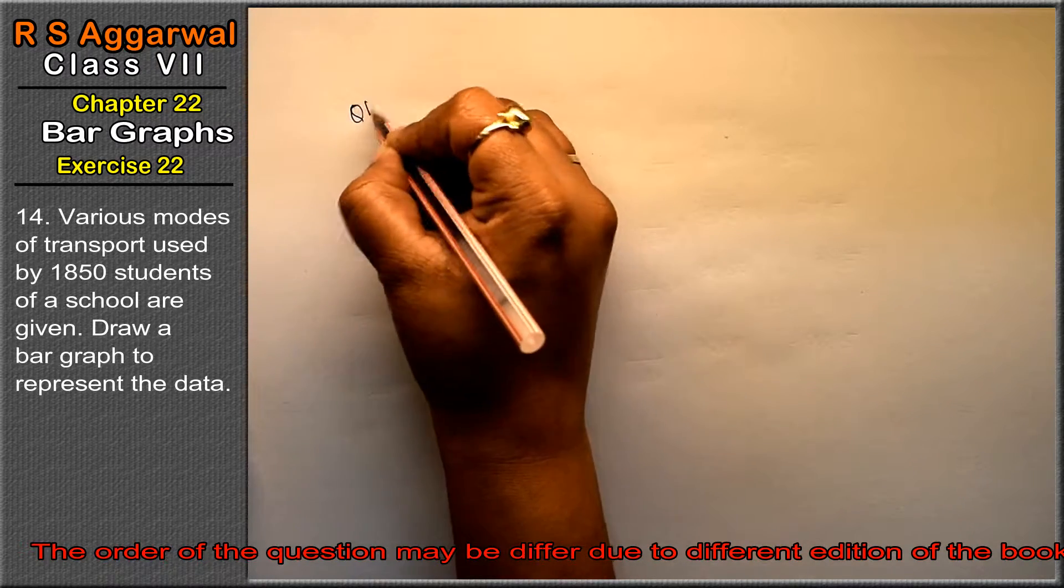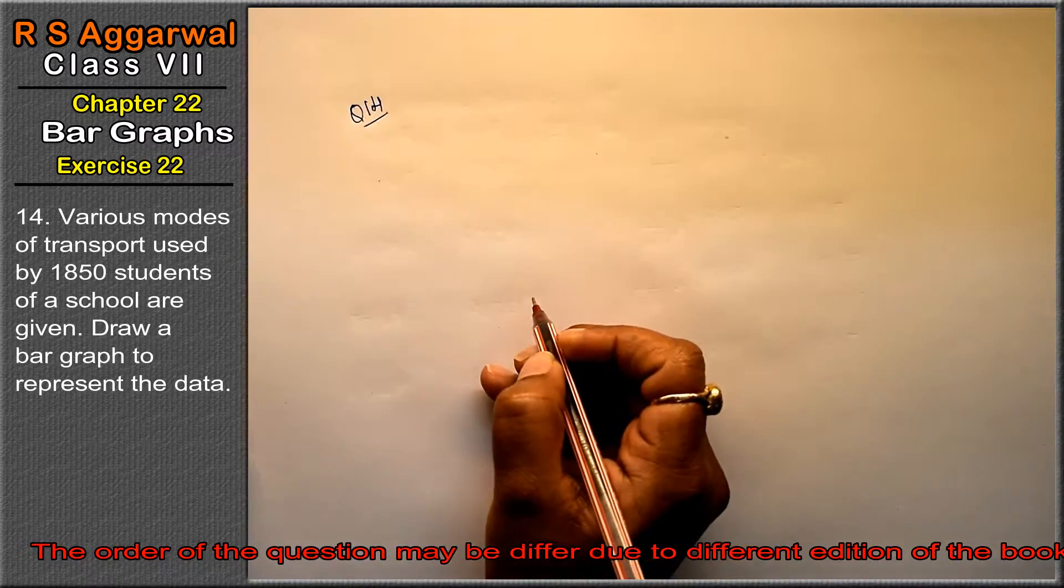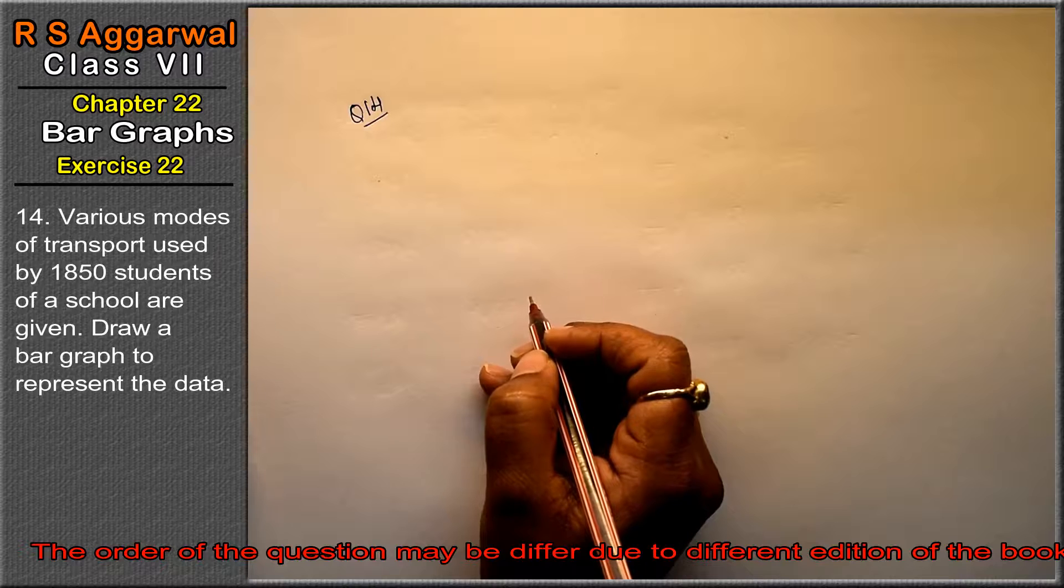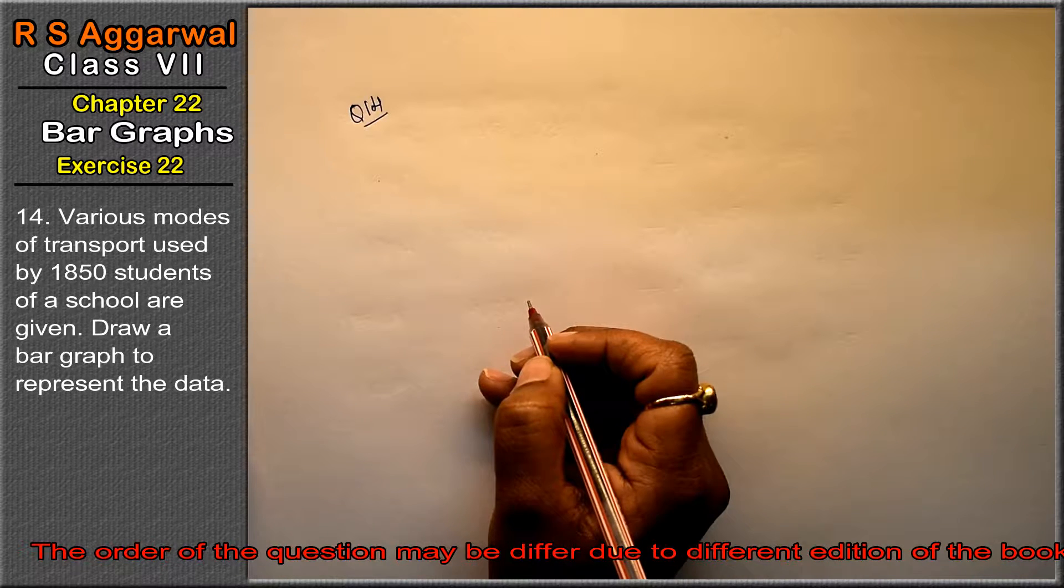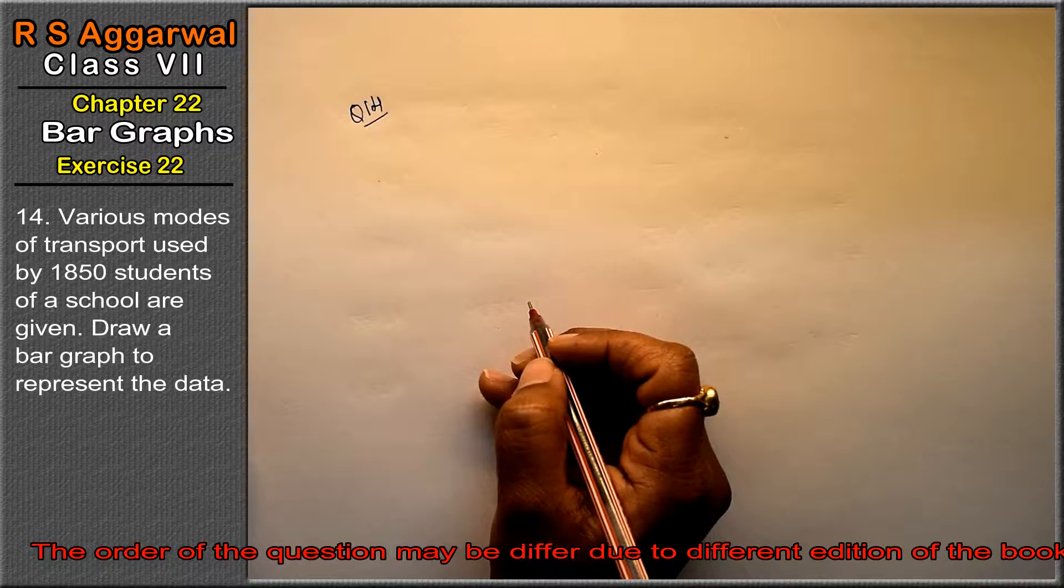Let's do question number 14 of exercise 22, that is bar graph. Question number 14 is various modes of transport used by 1850 students of a school are given below. Various transports they have taken, which different students have used.